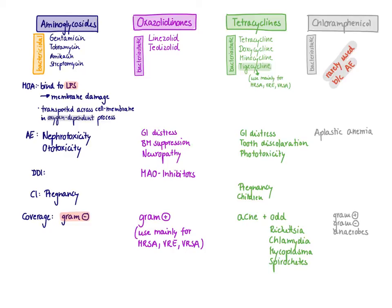Let's finish this slide with chloramphenicol. I don't want to spend a lot of time because it's rarely used due to serious adverse effects. The problem with chloramphenicol is that it can lead to aplastic anemia — it essentially destroys your bone marrow. This is an idiosyncratic reaction: you cannot predict it, it is not dose-dependent, and it is usually fatal. So you only want to use this drug as an absolute last resort. It is super broad spectrum and covers basically everything.